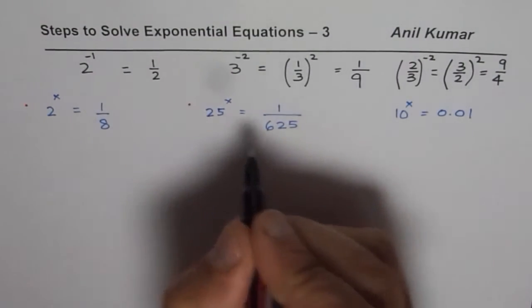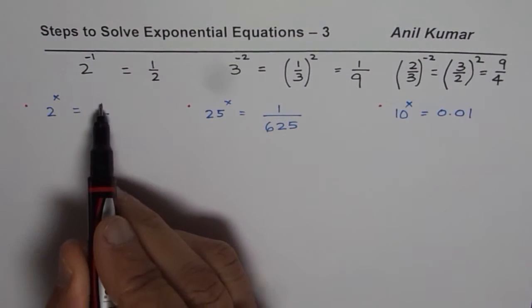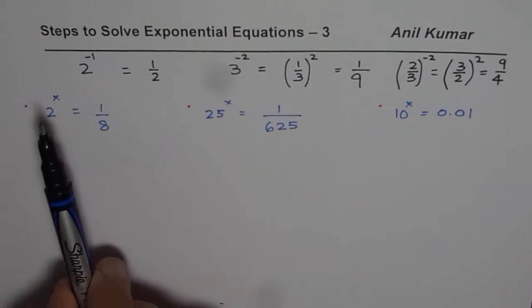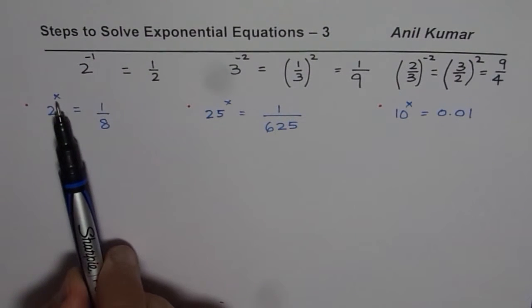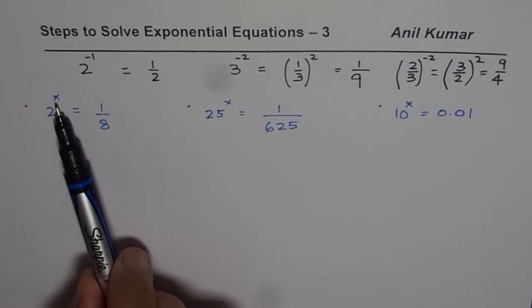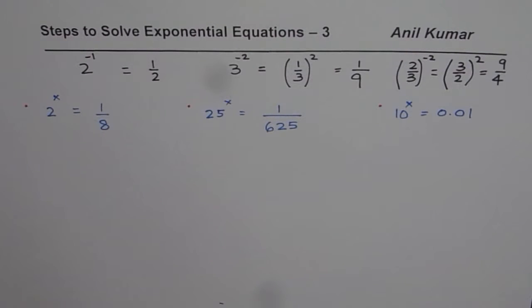All involve integer exponents. Since you see this fraction, a rational number here, 1 over 8, so that gives an idea that x should be negative. So in all these cases, we are expecting x to be an integer. That is what we are expecting.